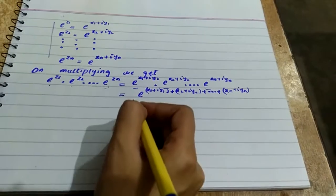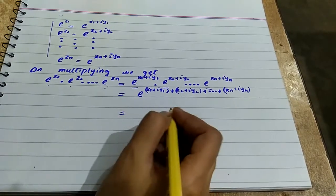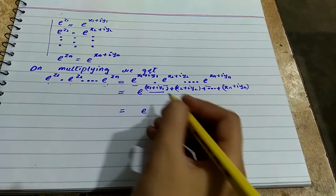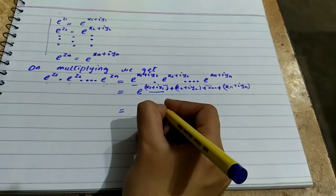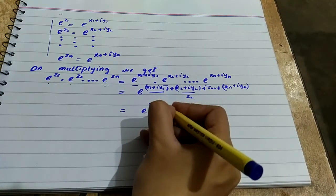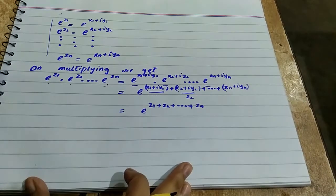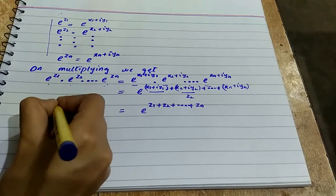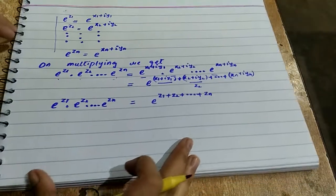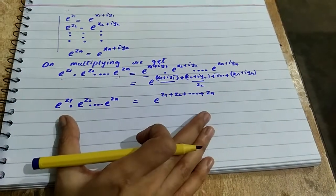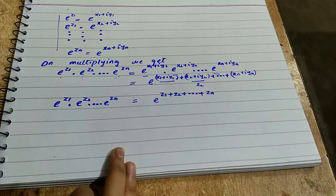Since the bases were the same, we added the powers. Now the final answer: since we had let x1 + iy1 = z1, x2 + iy2 = z2, and so on, and xn + iyn = zn, we substitute back to get e^(z1 + z2 + ... + zn). On the right-hand side we have e^z1 · e^z2 · ... · e^zn. Left-hand side and right-hand side match, so the proof is complete.